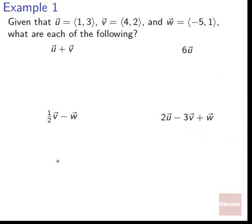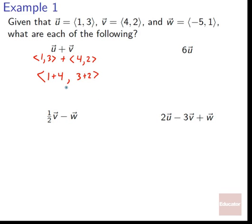Example one: given U equals ⟨1, 3⟩, V equals ⟨4, 2⟩, W equals ⟨-5, 1⟩, find U plus V. That's ⟨1, 3⟩ plus ⟨4, 2⟩. We add the first components: 1 plus 4 equals 5, and second components: 3 plus 2 equals 5. So U plus V equals ⟨5, 5⟩.